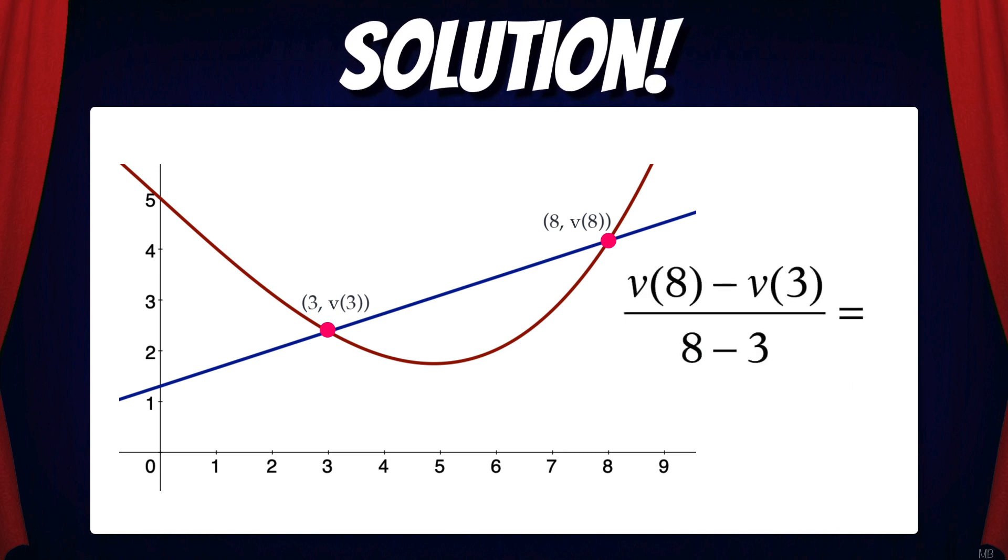This gives [v(8) - v(3)] / (8 - 3). Then we can use a calculator to simplify these values and get our final numerical answer: 0.358.